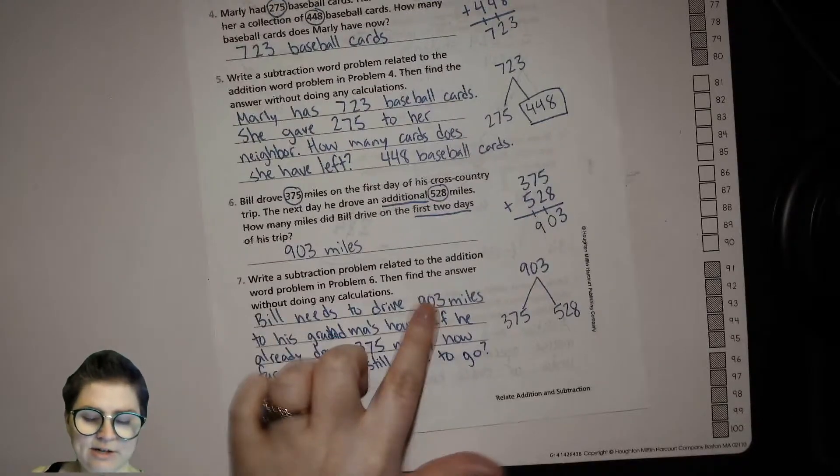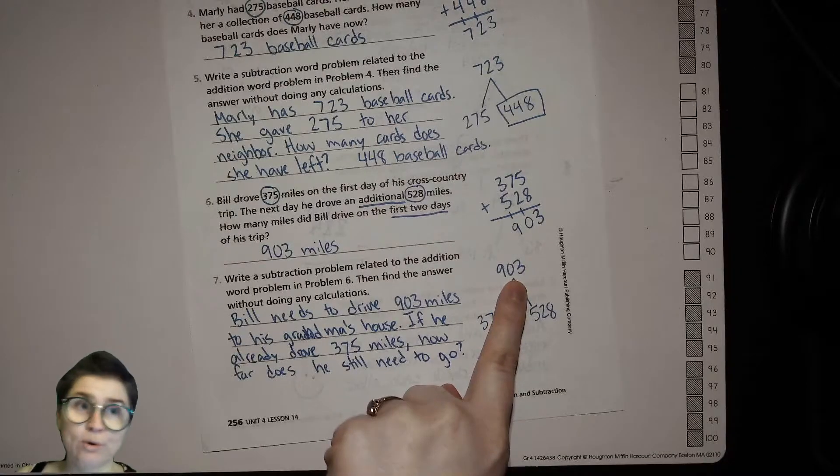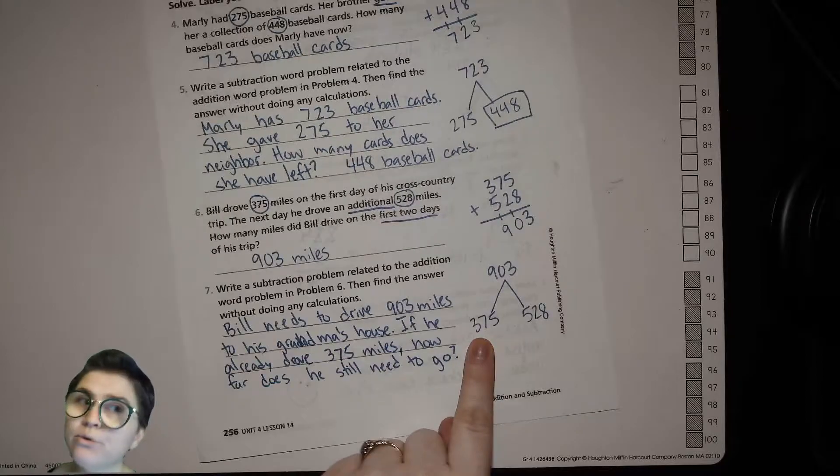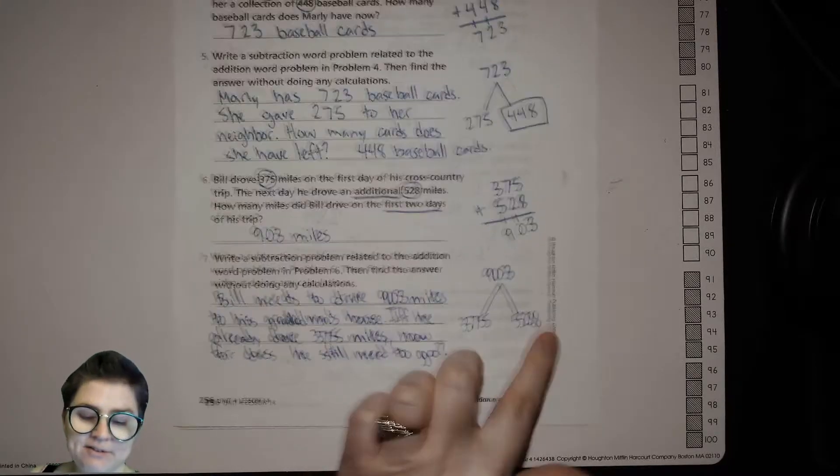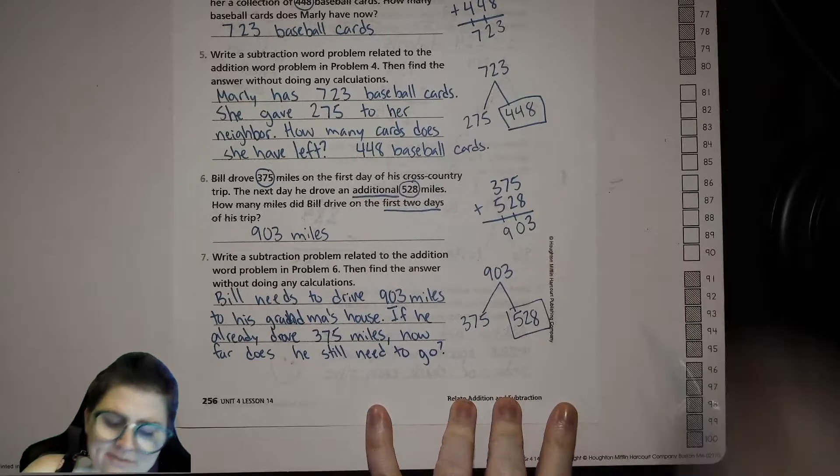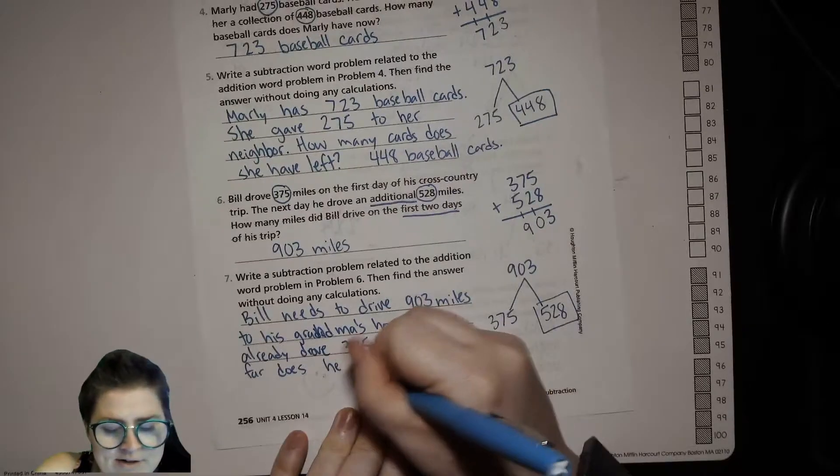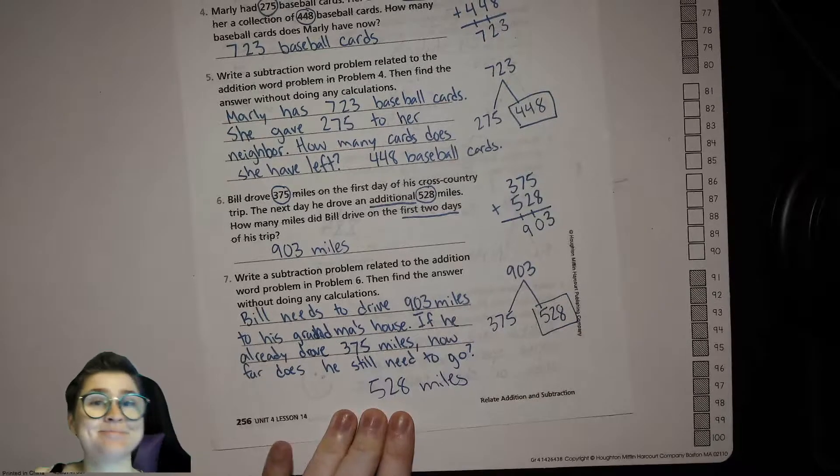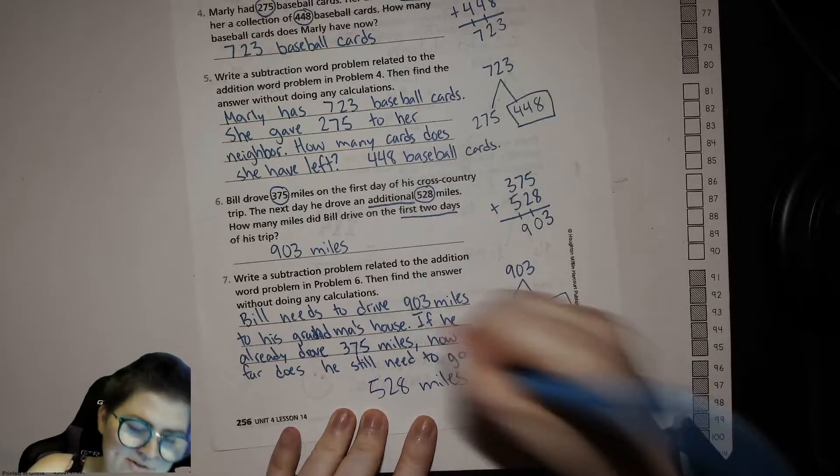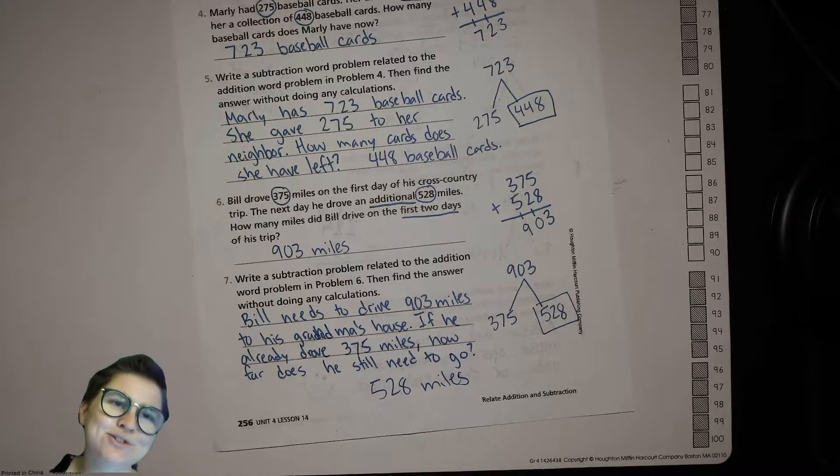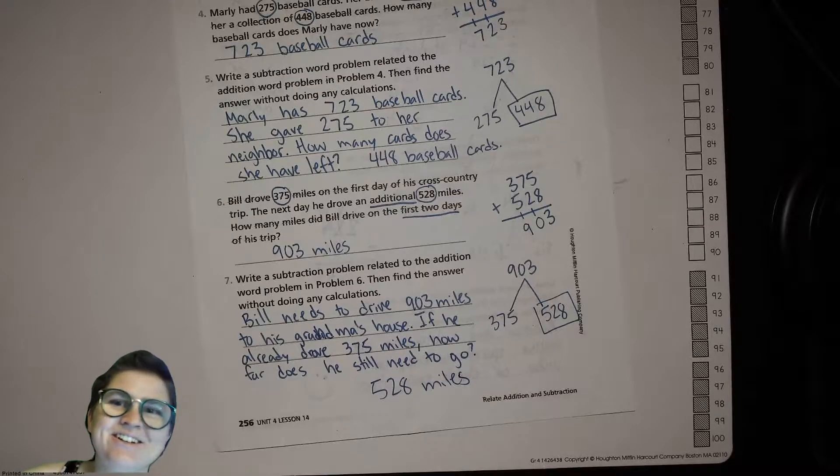All right! So if he has to go 903, a total of 903, he's already done 375, the only amount that's left that will be combined with 375 to make 903 exactly is 528. So 528 miles. All right! So go see if you have an assignment, my friends. I'll catch you next time. Thank you so much for joining me today. It's always nice having you here. All right, bye bye!